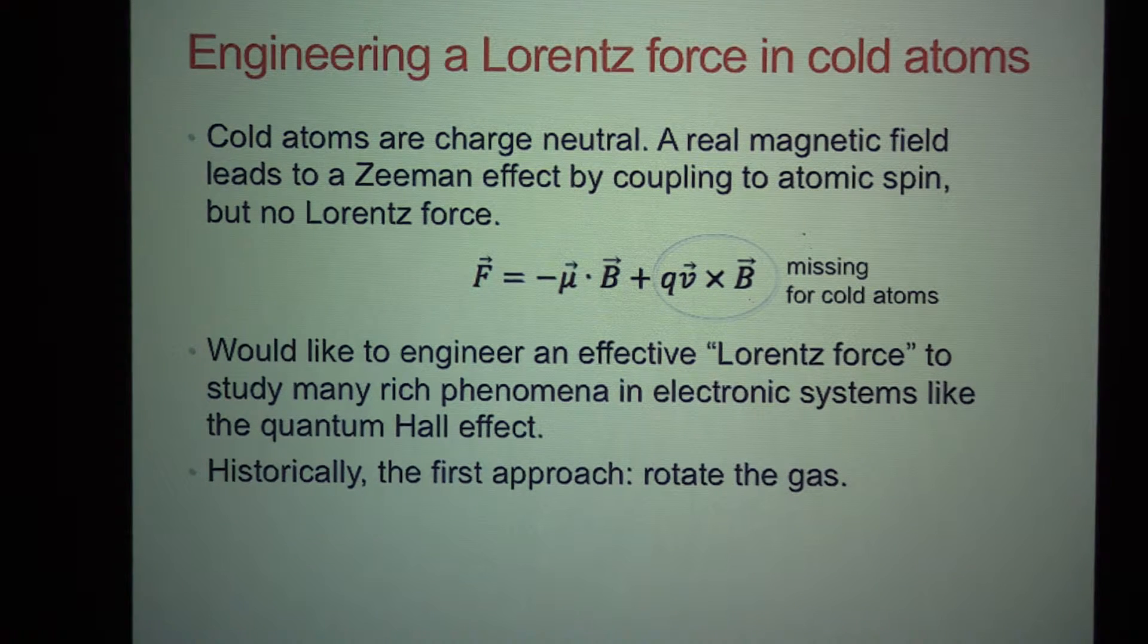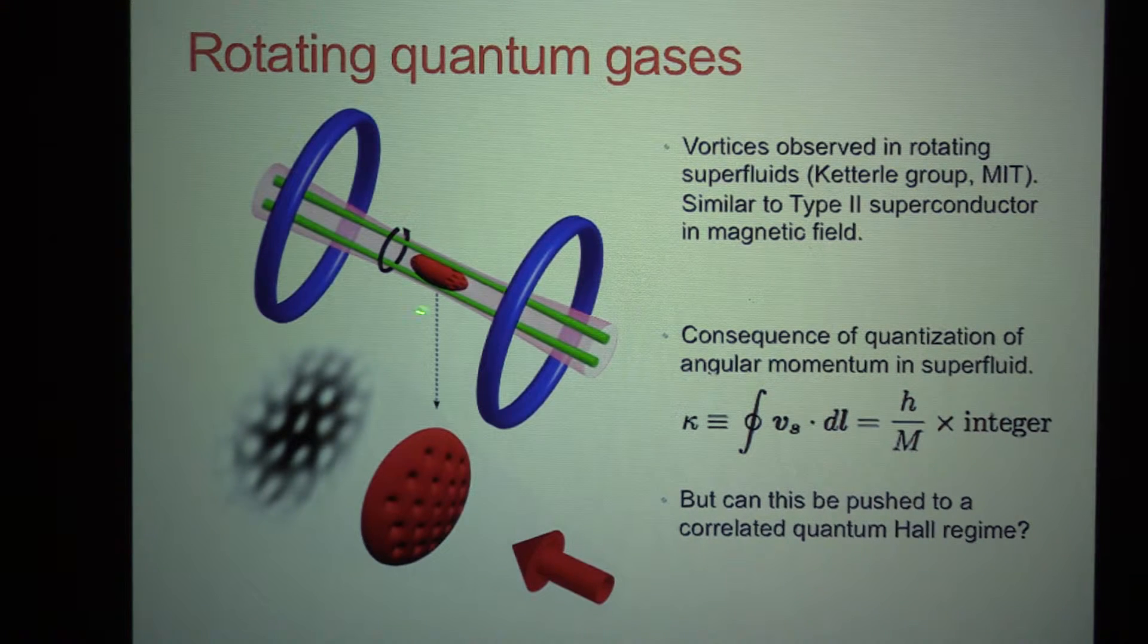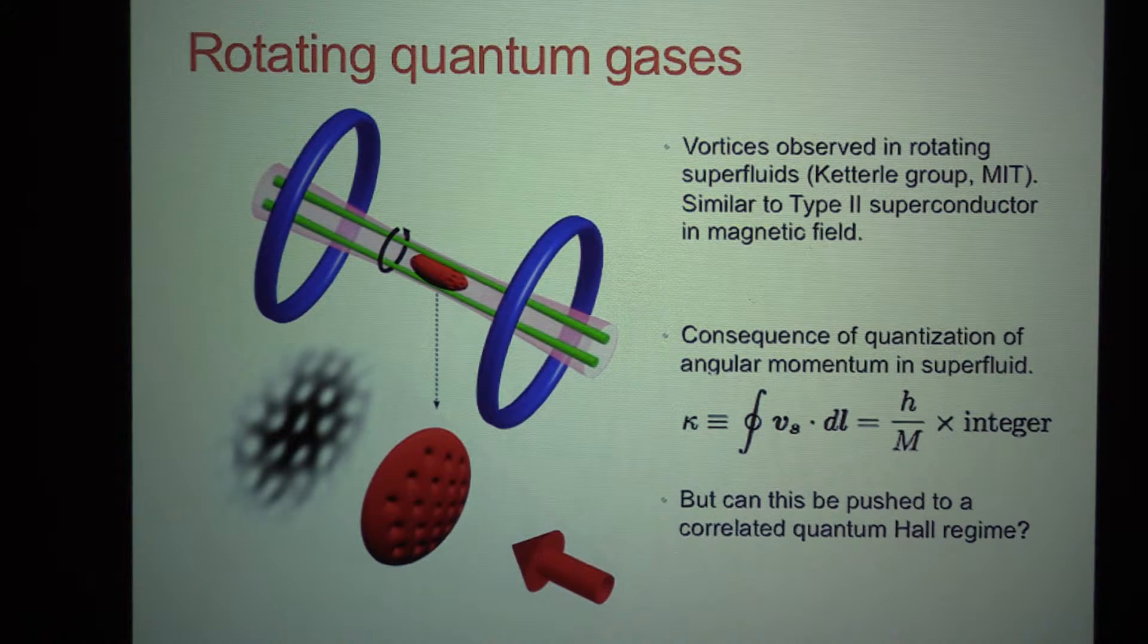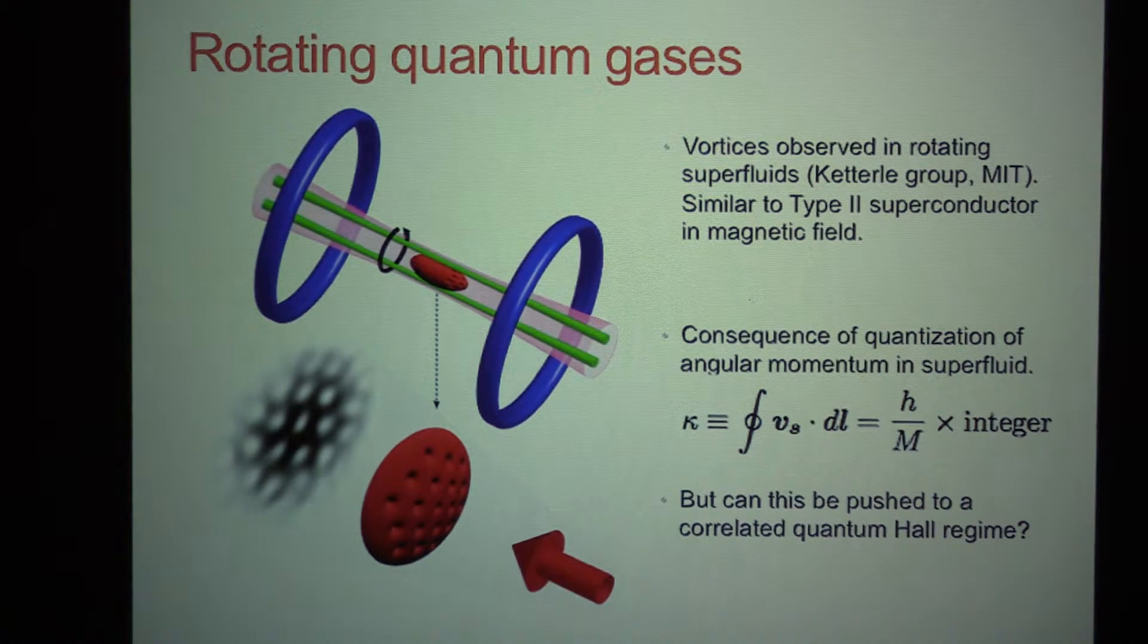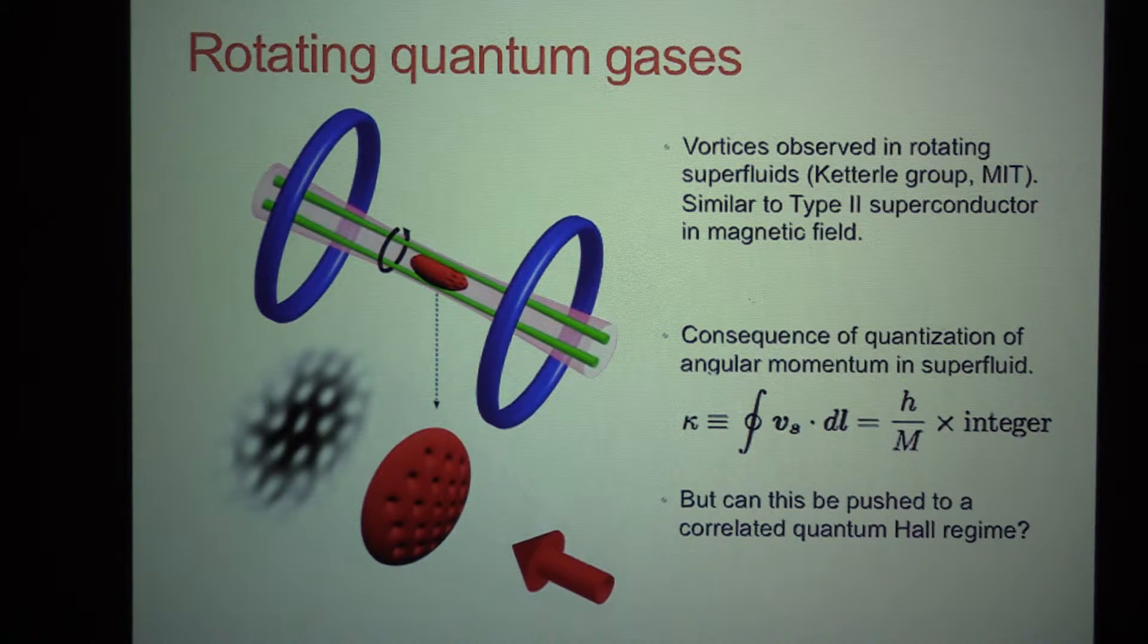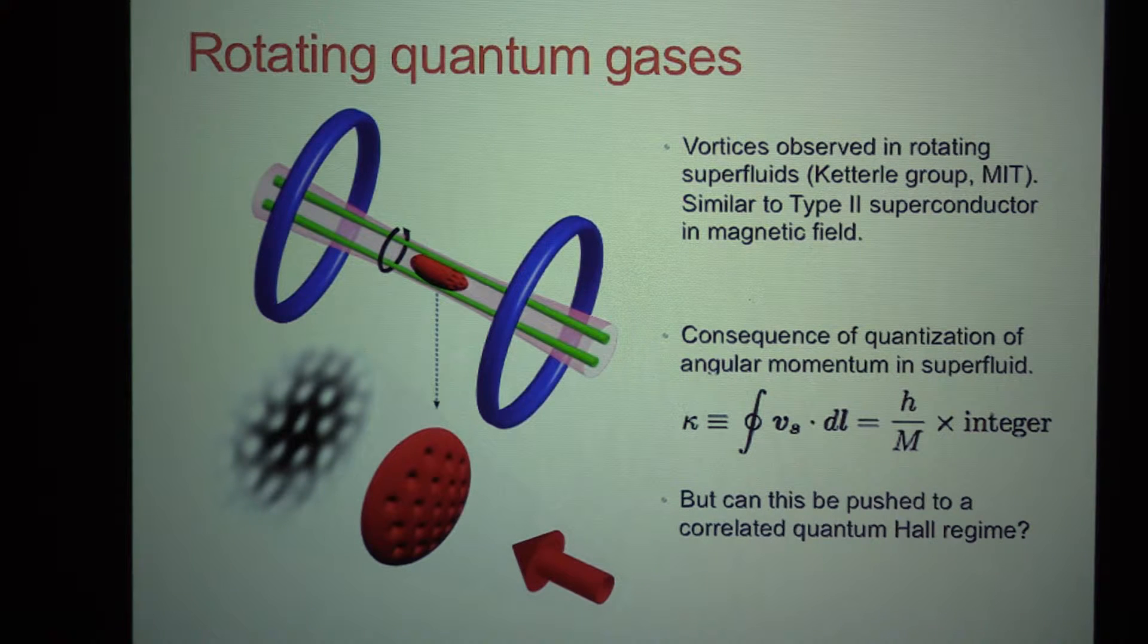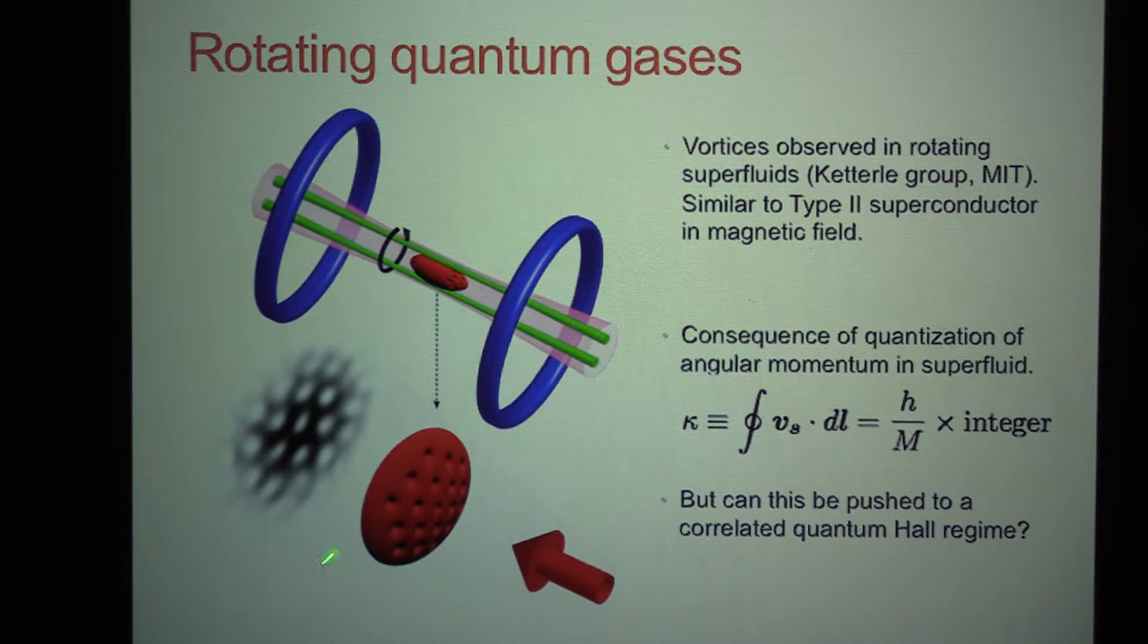Historically, the first approach that I'll go through has been to simply rotate the gas. So here is a gas that's trapped in an optical trap, in this case in Wolfgang Ketterle's group at MIT. What they do in this experiment, they've done this both with a Bose-Einstein condensate and with a fermionic superfluid. They shine these two green beams on it, which are like little mini traps. You can think of them like spoons that are rotating the superfluid, stirring the gas up. And what you see is when you stir this superfluid gas, you see the appearance of vortex lattices.